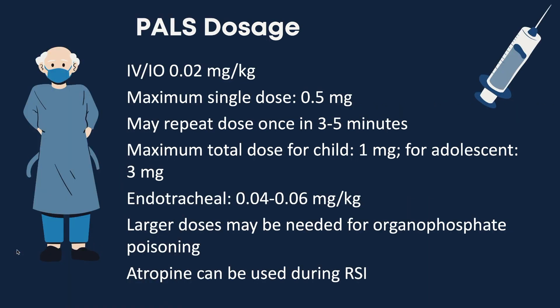For Atropine usage in pediatrics, the IV dose is 0.02 milligrams per kilogram for a maximum single dose of 0.5 milligrams. We may repeat this dose once in 3 to 5 minutes. The maximum total dose for a child is 1 milligram and for an adolescent is 3 milligrams. The ET dose is 0.04 to 0.06 milligrams per kilogram.